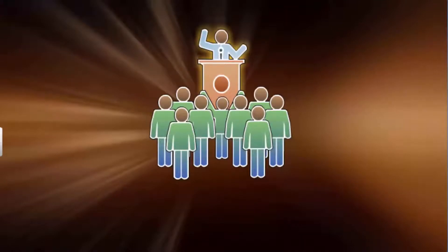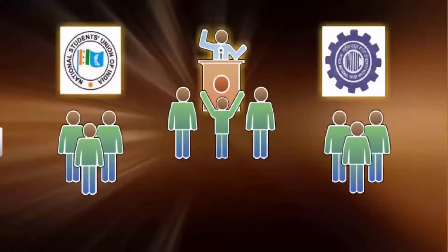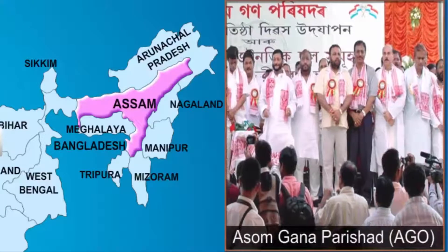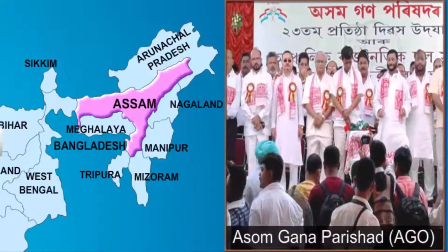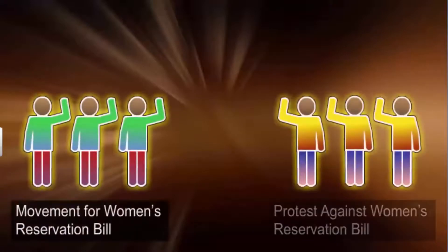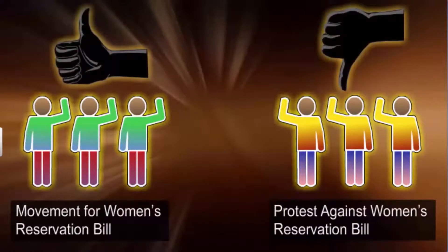For example, trade unions and student organizations in India. Sometimes these movements give birth to political parties — take the case of the student-led Assam movement against foreigners. When this movement came to an end, it led to the formation of the Asom Gana Parishad. In most cases, the relationship between parties and interest groups or movement groups is not direct, and they often take positions that are opposed to each other, though they are also in constant dialogue and negotiation.